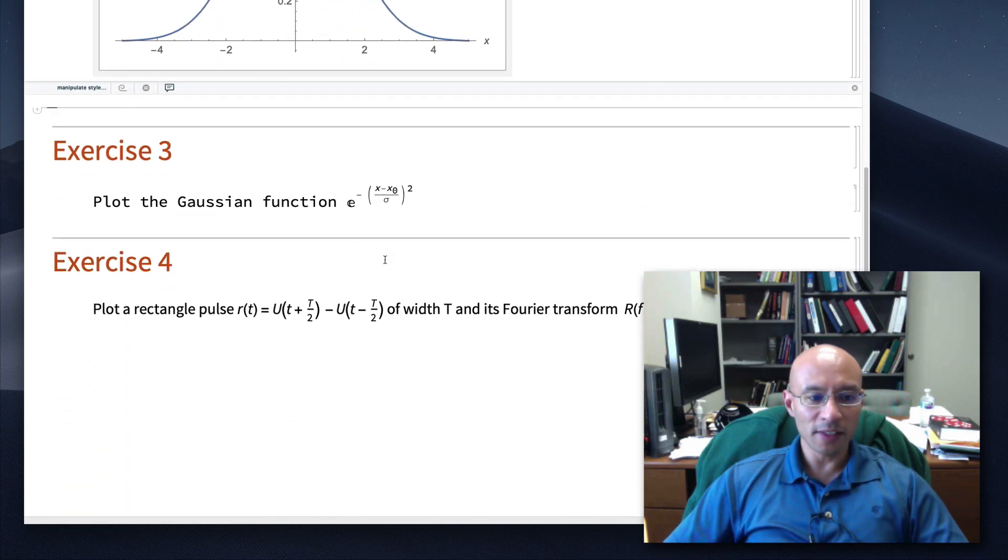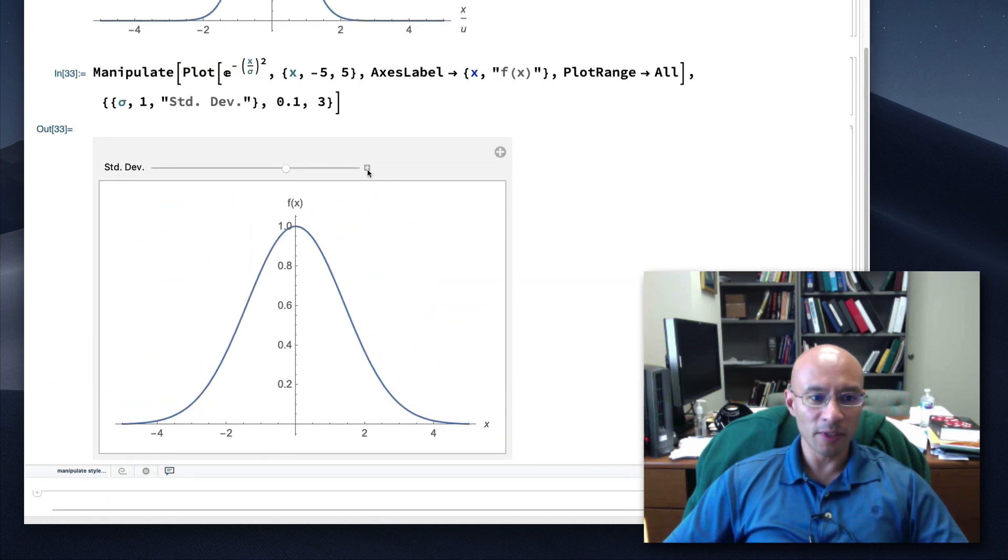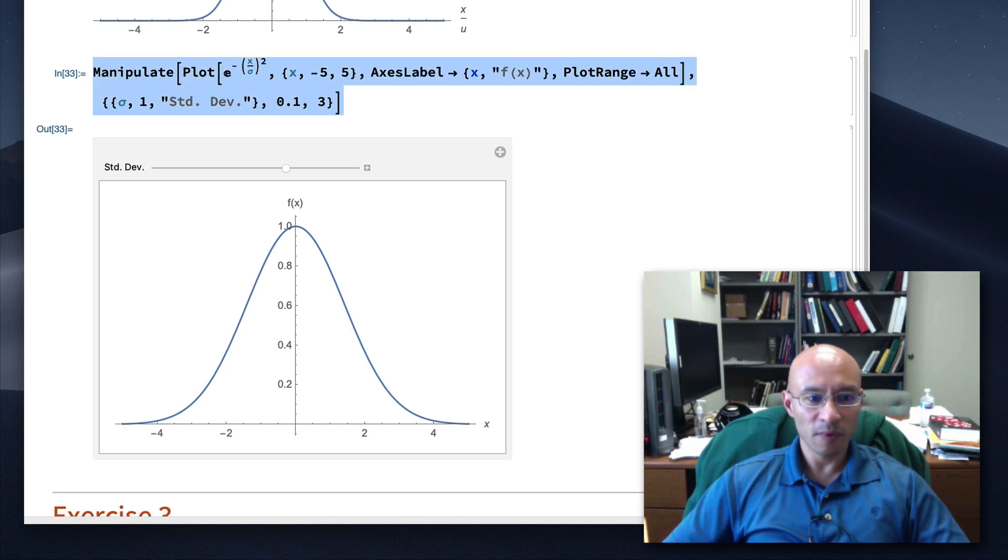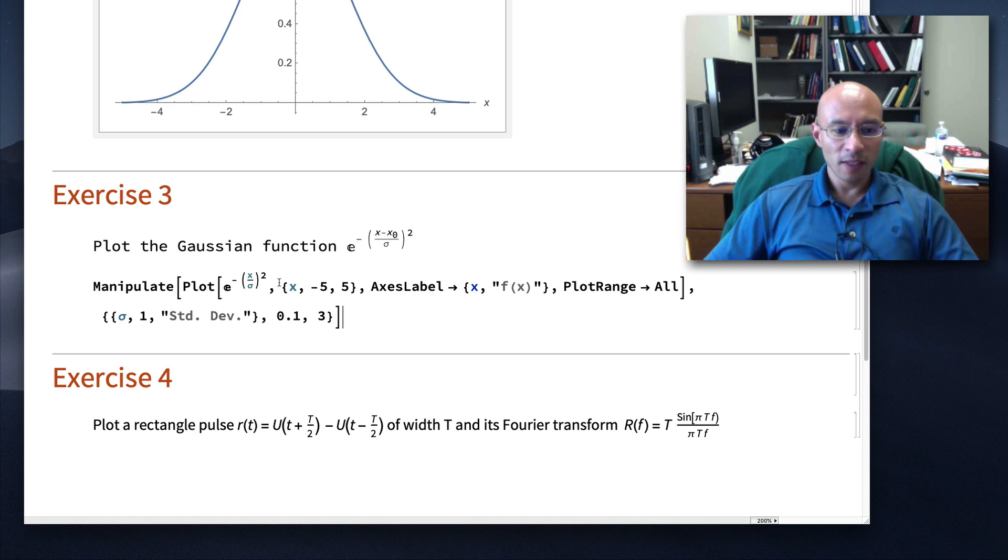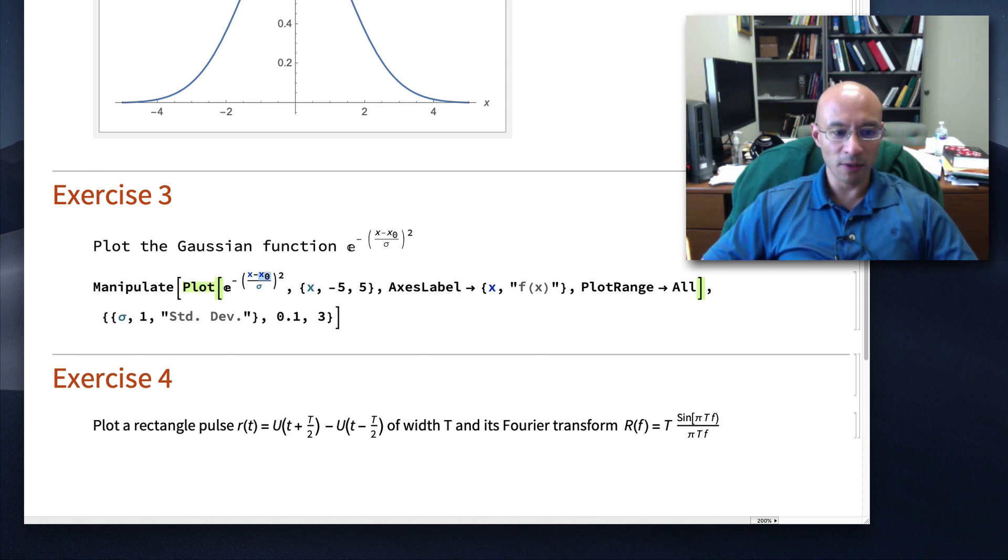Now, in exercise three, we introduce two unknown parameters. So let's just, I'm going to take the manipulate from above, and let's put it down here. Copy, paste. And I'm just going to add here an x, and then if I hit control minus, that's like the underscore. So I have this new constant x0. And so that tells me, okay, in my manipulate, I have a slider for sigma, but I need to add a slider for x0.